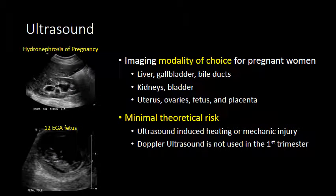Ultrasound is the preferred imaging modality in pregnant women. There's no ionizing radiation, and ultrasound does a good job looking at the liver and gallbladder or bile ducts, the urinary system including kidneys and bladder, and the pelvis. There's minimal theoretical risk associated with ultrasound. Ultrasound can induce some degree of heating or mechanical injury, but that is very unlikely. Doppler ultrasound has slightly increased heating or risk of mechanical injury, and because of that, we don't use Doppler ultrasound in the first trimester of pregnancy.